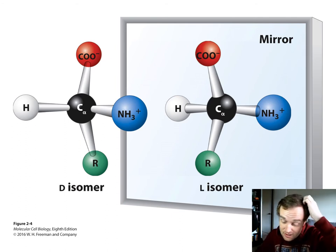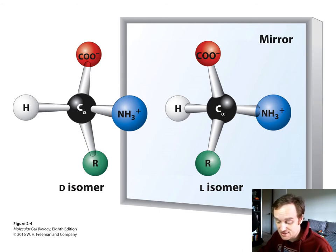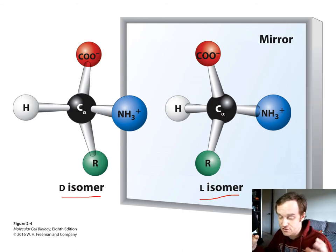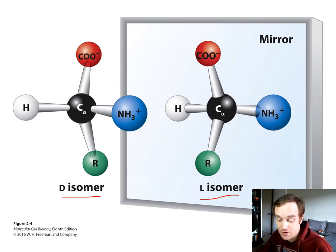Many molecules in cells, such as amino acids and sugars, contain at least one asymmetric carbon atom. Here we have an example of a carbon atom with the L-isomer and the D-isomer. They are mirror images of one another based on their shape. Although the L- and D-stereoisomers of amino acids are chemically identical, only the L-amino acids are found in proteins.